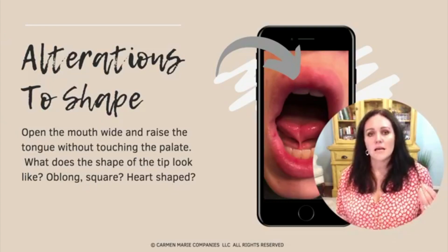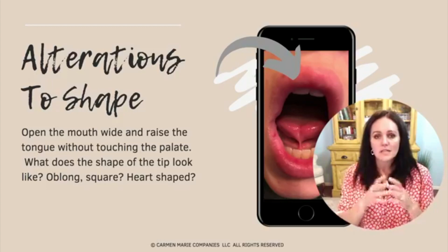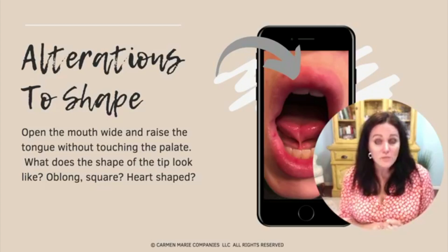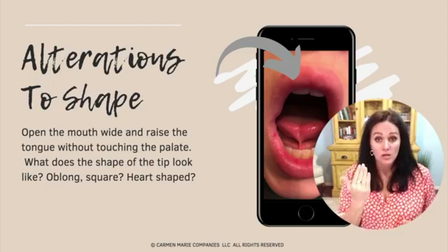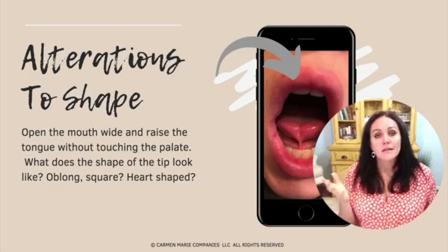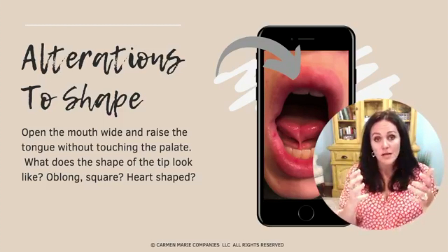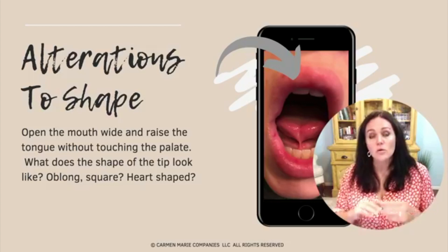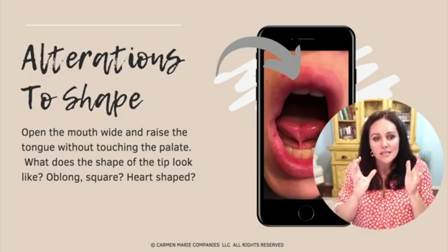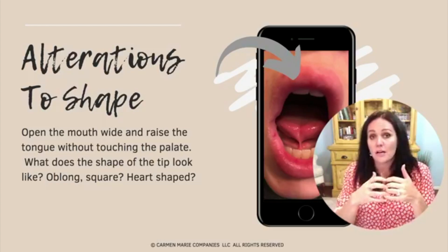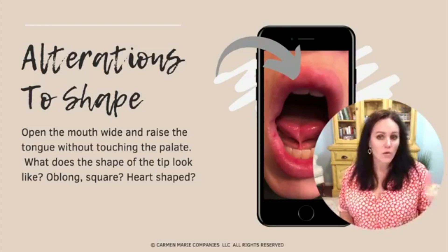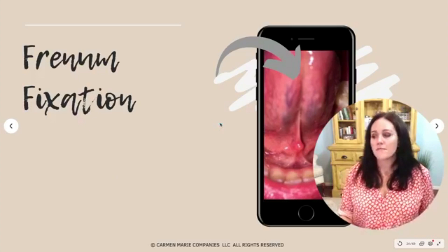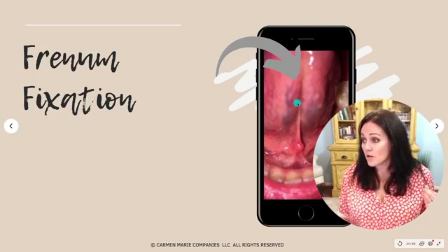Next is looking at the shape of the tongue. Open your mouth wide — you're not trying to reach the palate, you're just seeing what the tongue looks like. In this slide, this is clearly a heart-shaped tongue — a classic, obvious tie. But look at what yours looks like. Does it have a heart shape? Everybody always thinks it can only be a heart shape or there's no tongue tie, which is not the case.